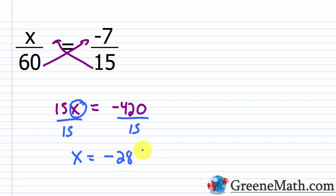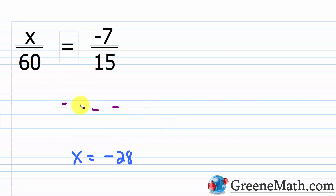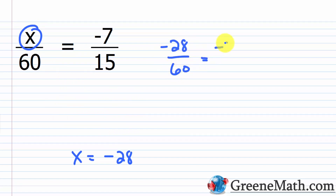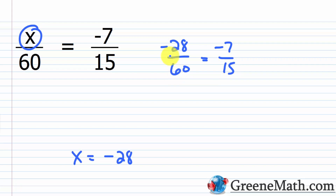You can check that by plugging in -28 for x: -28/60 = -7/15. If you multiply -7 by 4 you get -28, and if you multiply 15 by 4 you get 60. So -28/60 reduces to -7/15 — those two are equal.